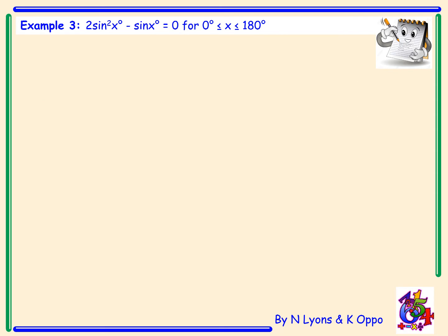Example 3. Solve 2 sin²x − sin x = 0, where x lies between 0 and 180 degrees. We can rewrite 2 sin²x − sin x in terms of just x's as 2x² − x = 0. Sometimes it's easier to do this at the side of your page to help factorise.